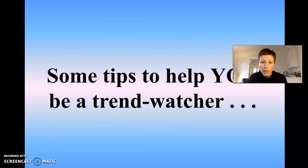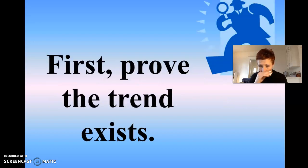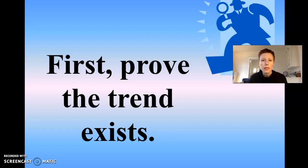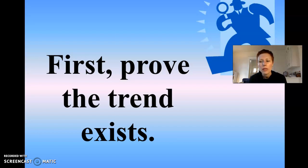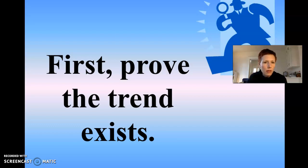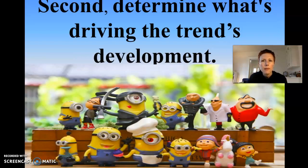Here are some tips to help you as you think about choosing a trend. First, you have to prove that it exists — prove that it actually is a trend. There will be a proof section in your paper where you're proving that more people are doing this, more people are buying this. I've had people do the vegan lifestyle as a trend, organic eating or organic living as a trend, fitness as a trend, or obesity as a trend. You have to be able to prove that more people are being affected by this.